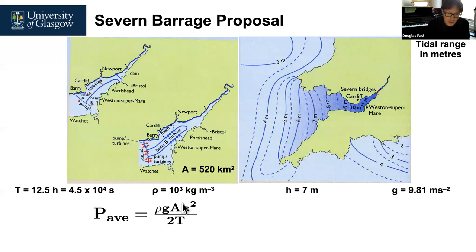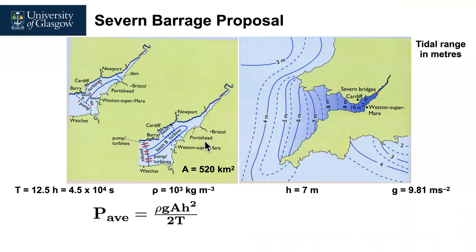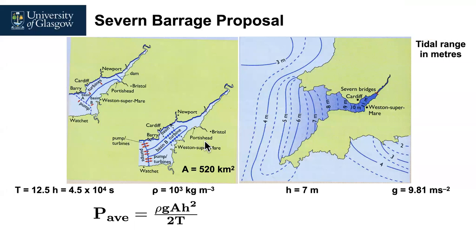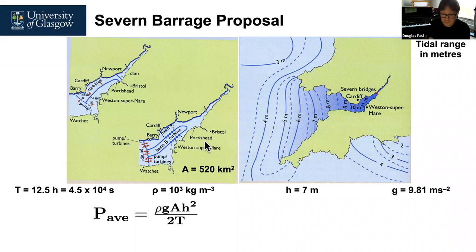Can anyone guess how much power might be available? If a nuclear reactor is about a gigawatt, how many megawatts or gigawatts do you think this scheme could produce? Students guessed 50 megawatts and 40 megawatts. Thanks for those guesses — we'll calculate the actual numbers.